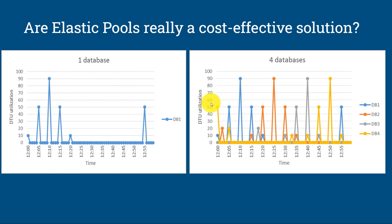Now, over a period of time, if you find that DB1 is consuming more DTU and due to that the remaining databases won't get resources and you find a performance issue, at that time you can remove DB1 from the elastic pool. Adding and removing a database from the elastic pool is very easy.